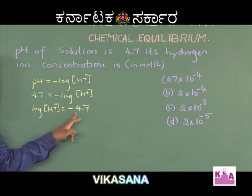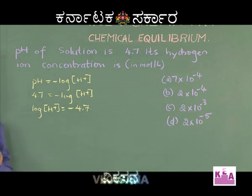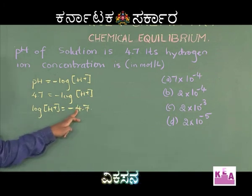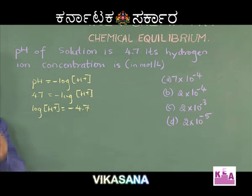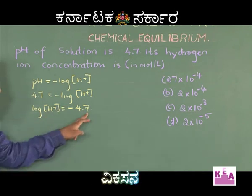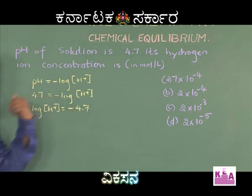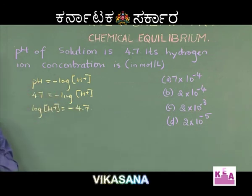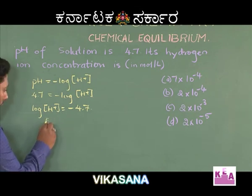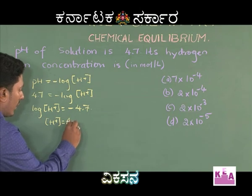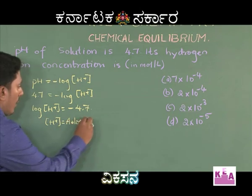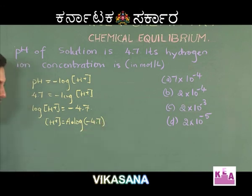Antilog of -4.7 cannot be calculated directly because -4.7 indicates the characteristic is also negative and the mantissa is also negative. To calculate the anti-logarithm, at least the mantissa part should be positive. Hence, we need to convert the negative mantissa into positive and then solve the problem.